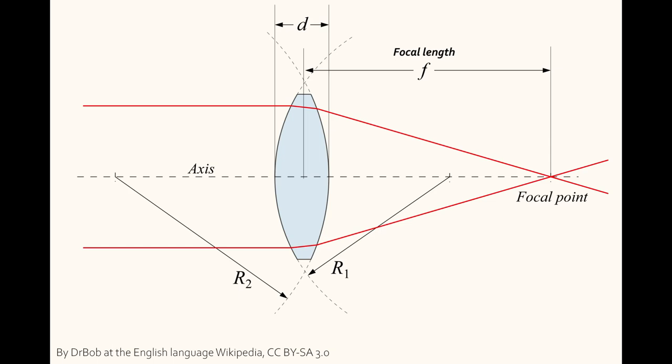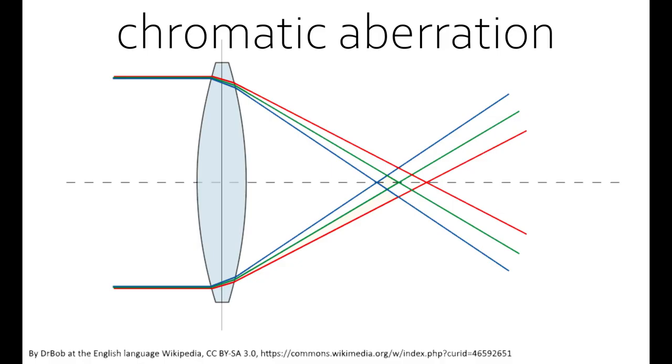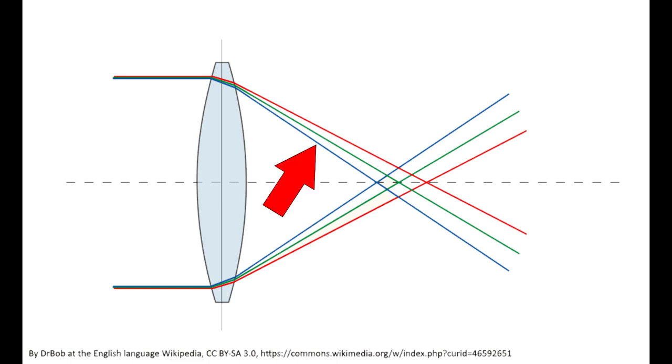A lens refracts light depending on its color, so its wavelength. This effect is called chromatic aberration. So unfortunately for us the path of the blue light is bent more than the light path of the red light.